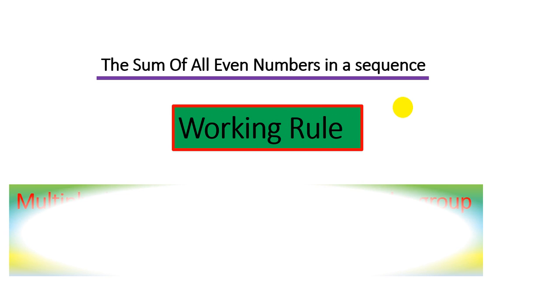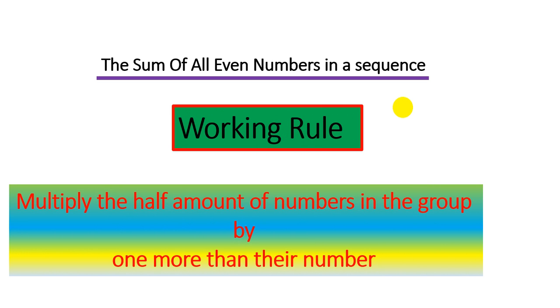So here is the working rule. First multiply half the amount of numbers in the group by one more than their number. Now to understand this working rule, first take an example.